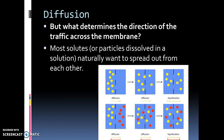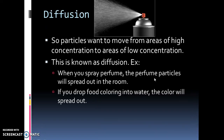The first way that substances are transported into and out of the cell is by diffusion. What determines the direction of traffic across the membrane? Most solutes, or particles dissolved in solution, want to spread out from each other — they want to move from a high concentration to a low concentration. When particles move from areas of high concentration to areas of low concentration, this is known as diffusion.